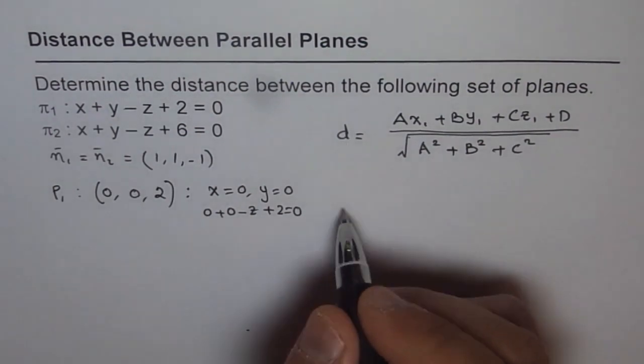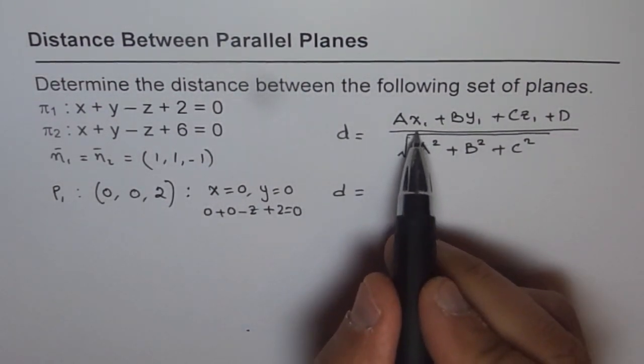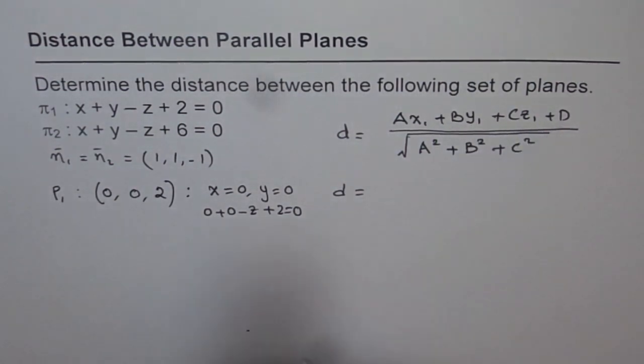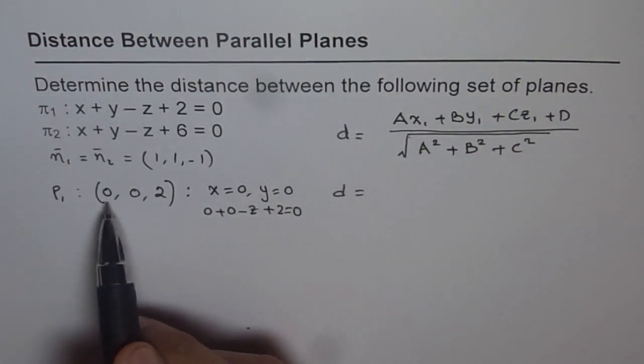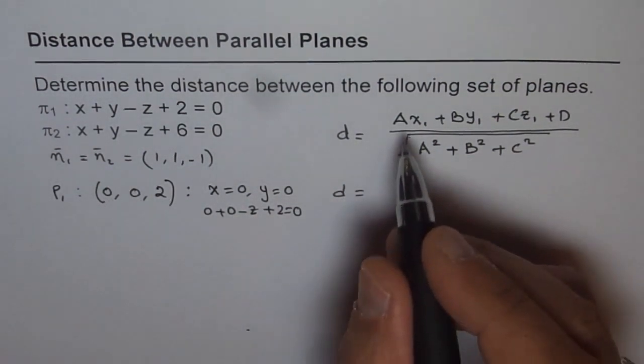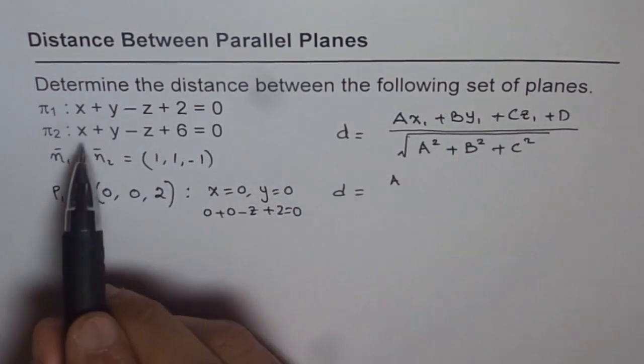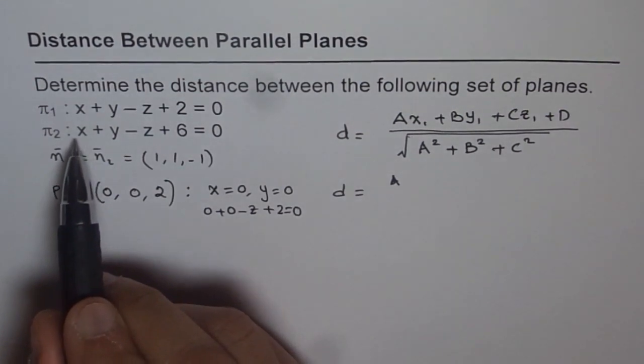Let's find distance using this formula. The distance formula is d equals to a times x1 plus b times y1 plus c times z1 plus d, where x, y, and z1s are this point, 0, 0, and 2. When we substitute that, we get a is, actually, I should have used this equation.